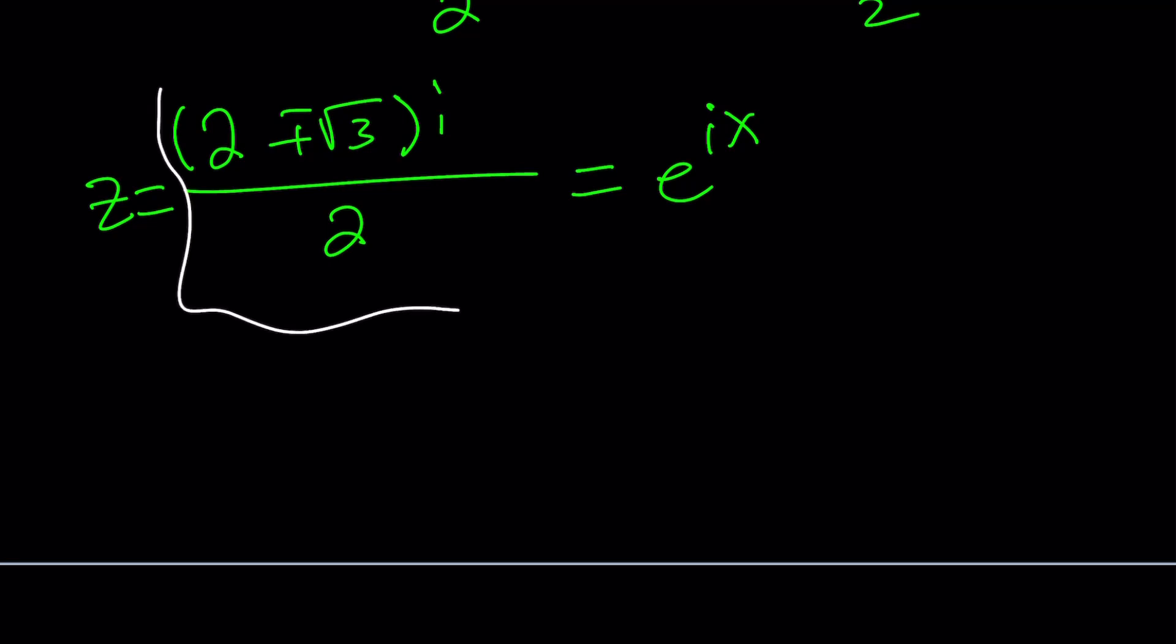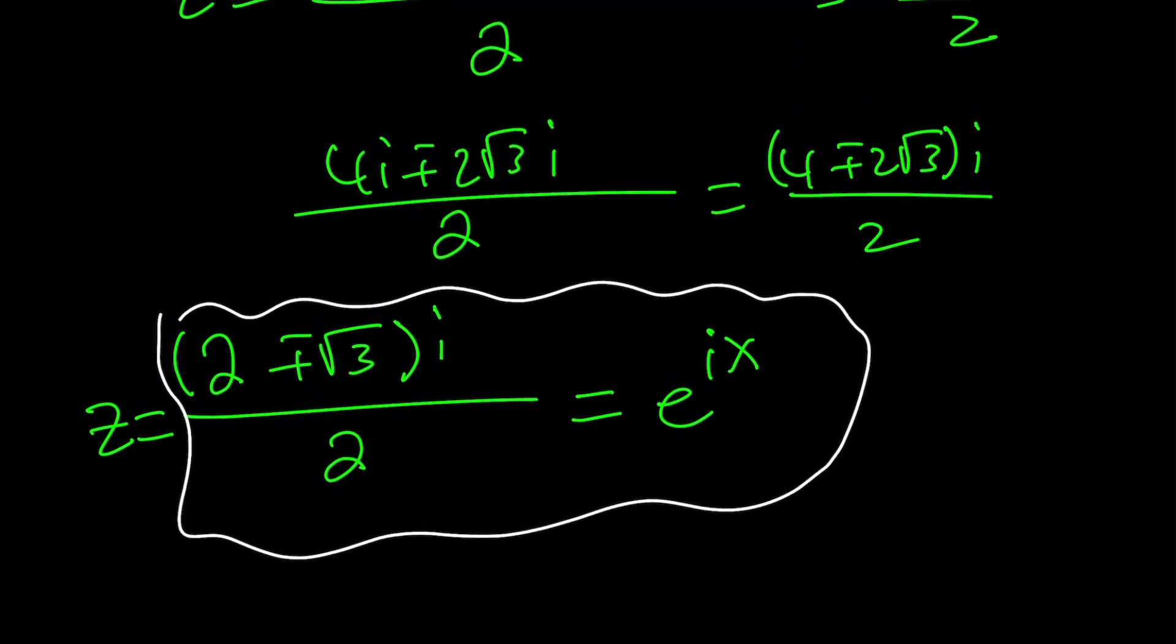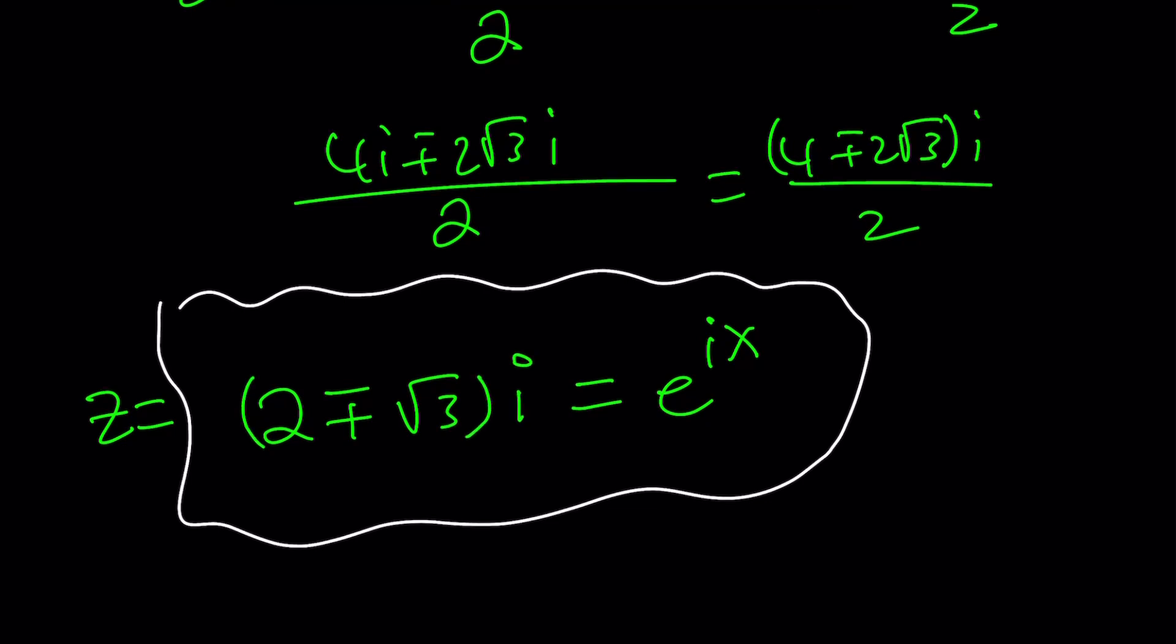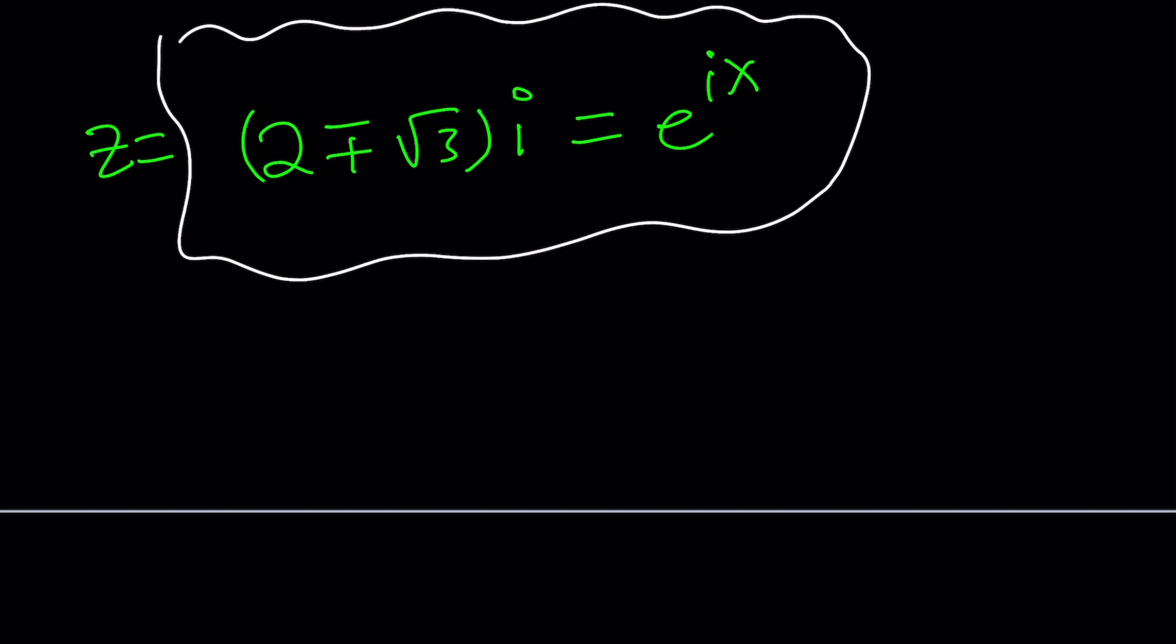So from this equation, we should be able to find the x values by using natural logs. But we must do a couple different things first. Anyways, so from here we get the following. Oh, by the way, I forgot to cancel out the 2. When I divide it, I'm over dividing by 2. So the answer is supposed to be, let's erase all of that. z is equal to 2 plus minus root 3 all multiplied by i. So this is e to the power ix. And now we're going to solve for x.